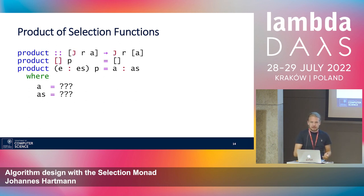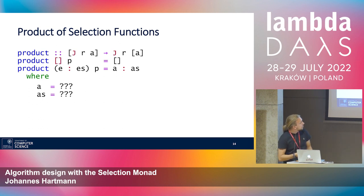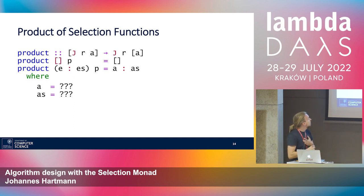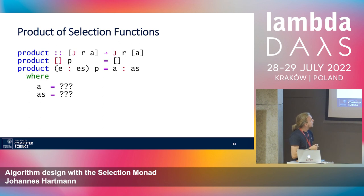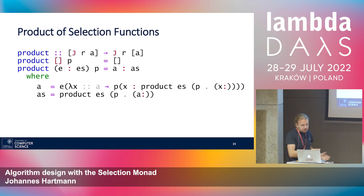Given a non-empty list, we get an A out of the first selection function and then call ourselves recursively on the rest. The result looks like a longer expression, but it does the same thing as the pair: to get an A out of the first selection function we need a judgment function that judges each element in context, calling ourselves recursively and looking at all possible futures given each choice.